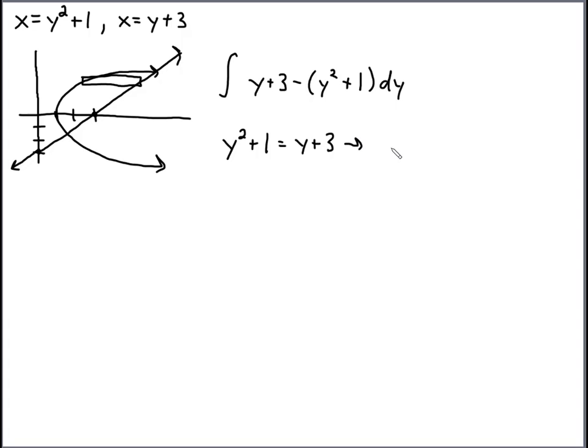That's a quadratic equation. So that's y squared minus y minus 2 equals 0. And we can factor that. We get y minus 2, y plus 1. So that gives two y values: y equals 2 and y equals negative 1. So those are our bounds. We can put those in now, negative 1 and 2.